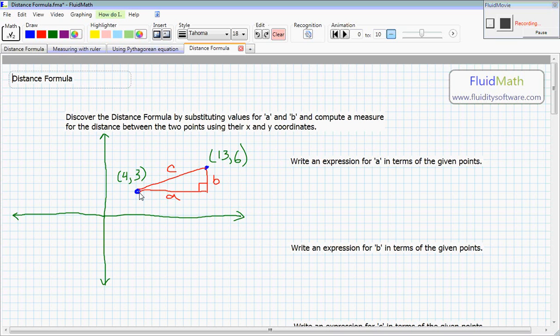So a is this distance between, the horizontal distance between the two points. We can figure that out. If each one of these squares is one unit, we can see, and we already know that this point is four units to the right of the origin. And we know that the second point is thirteen units to the right.